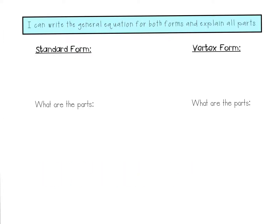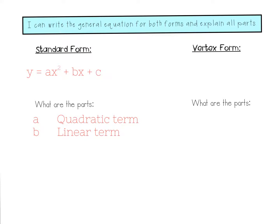Let's start with standard form. Standard form is y equals ax² plus bx plus c. So what are the parts? Well, first we have the a, which is part of the quadratic term. Then we have the b, which is part of the linear term. And then finally we have the c, which is the constant — or as we learned, it's the y-intercept. To write in standard form, I need those three coefficients, and I also need it simplified: one quadratic term, one linear term, and one constant.